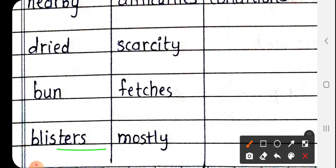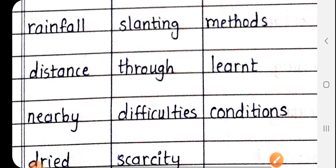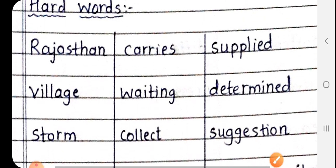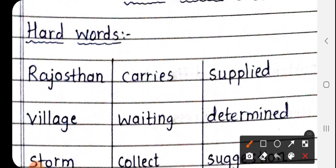Next is blisters. B-L-I-S-T-E-R-S, blisters. Next, carries. C-A-R-R-I-E-S, carries. Next, waiting. W-A-I-T-I-N-G, waiting.